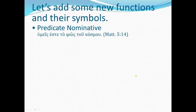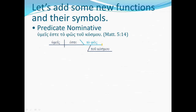The predicate nominative is a sentence function where the nominative case is used to complete a linking verb and rename or describe the subject. Because of its connection back to the subject, it's in the nominative case. Here's an example: You are the light of the world, Matthew 5:14. The verb is este. Who or what is something? You are something. You are who or what? You are the light of the world. So to phos is the complement of the verb.